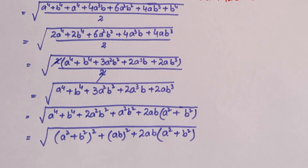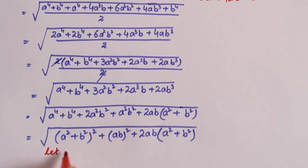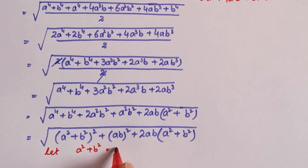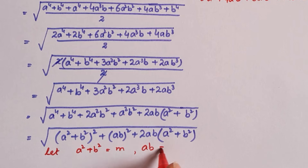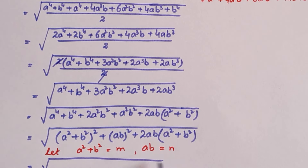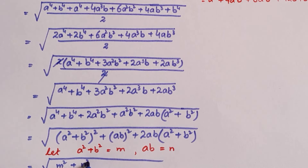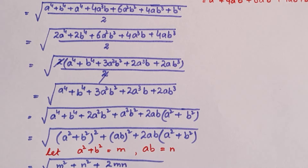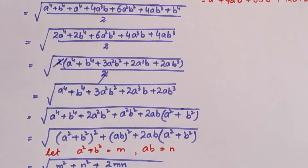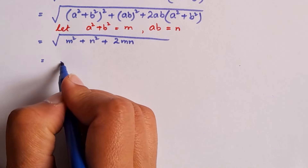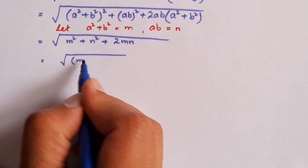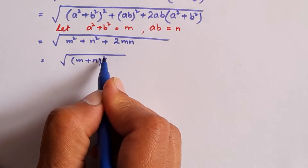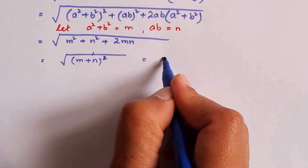Now we let m = a² + b² and n = ab. Substituting, the expression becomes the square root of m² + n² + 2mn, which is the algebraic identity (m + n)². The square root and the square cancel out, leaving us with simply m + n.